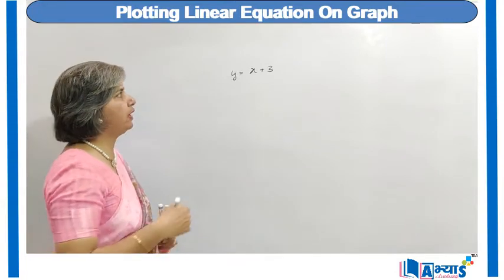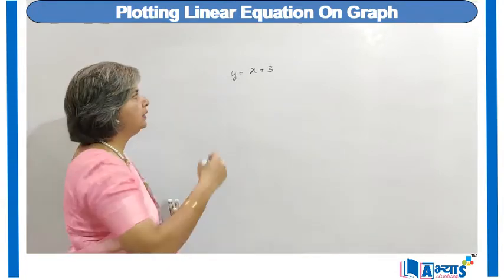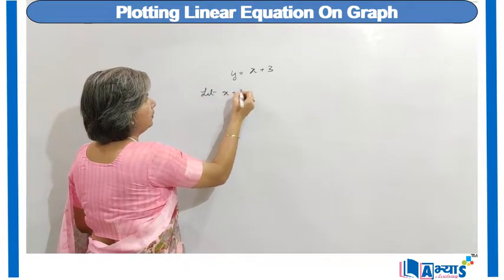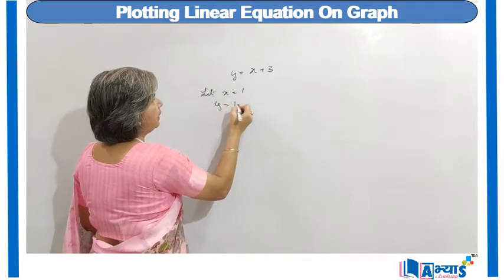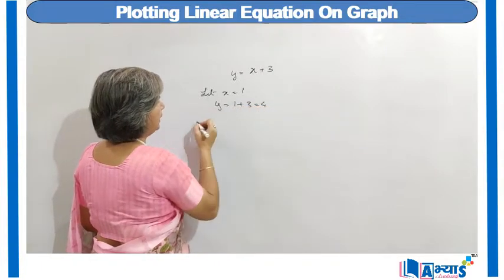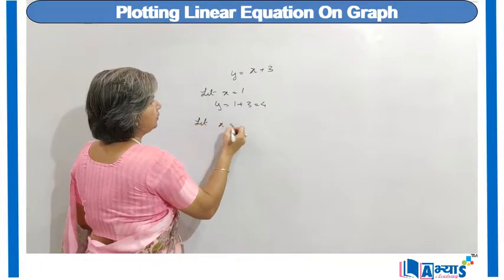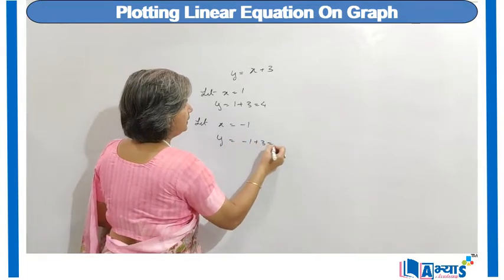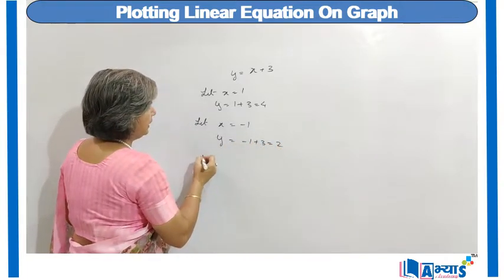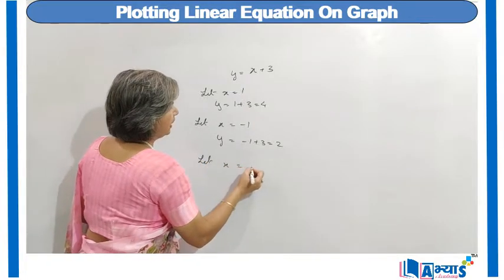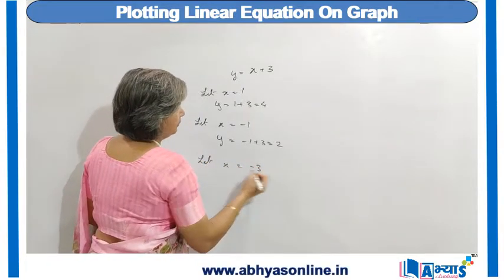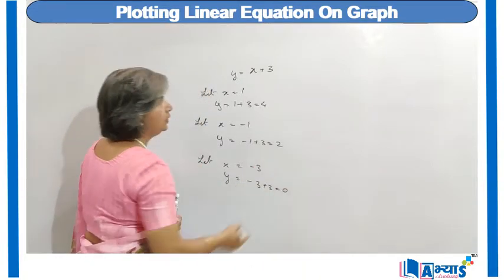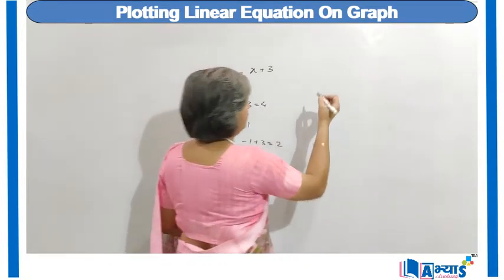For different values of x, we will try to find the values of y. Let x be equal to 1; then y will be equal to 1 plus 3, that is 4. Let x be equal to minus 1; then y will be equal to minus 1 plus 3, which is 2. Or let x be equal to minus 3; then y will be equal to minus 3 plus 3, that is 0.